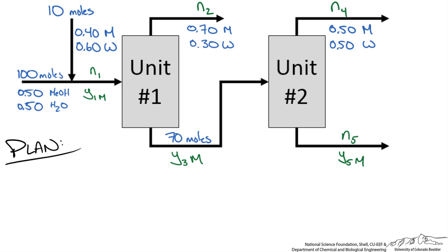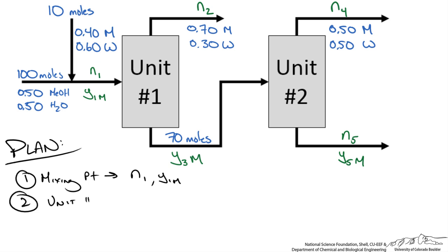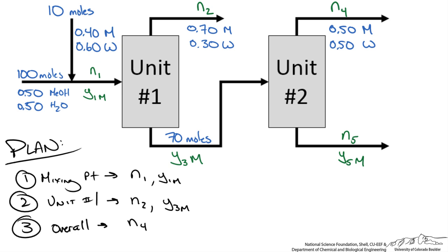Our plan to solve for the unknowns: first, a mixing point balance gives us N1 and Y1M. Knowing N1 and Y1M, we do a balance around unit 1 to get N2 and Y3M. Finally, we do an overall balance: since we know N4 equals N2, that leaves N5 and Y5M as the only 2 unknowns, solved with 2 balance equations.